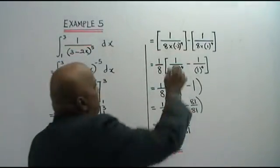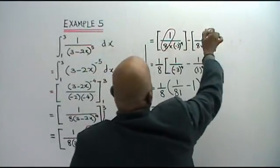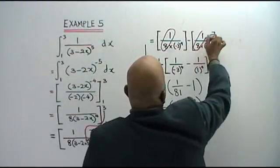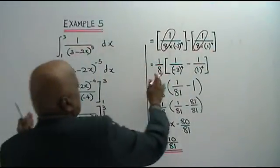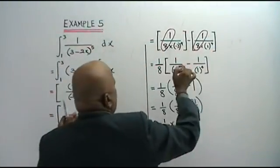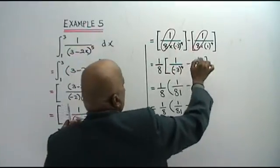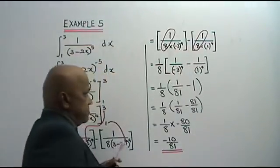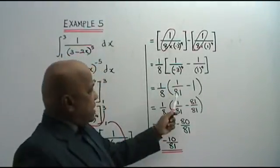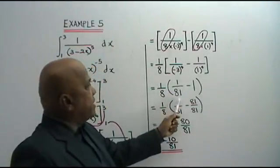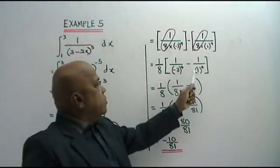Now you see the common factor: 1 over 8. You bring it up. So what you have left is 1 over (negative 3) to the power 4, minus 1 over 1 to the power 4. (Negative 3) to the power of 4 is 81. So you have 1 over 81.